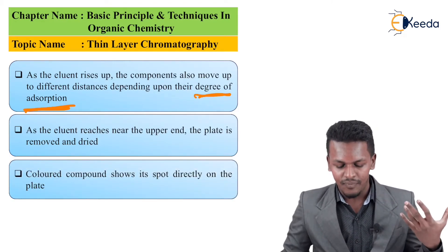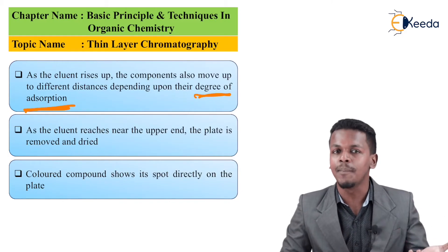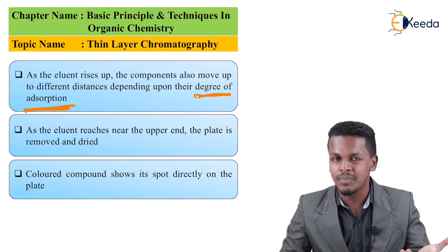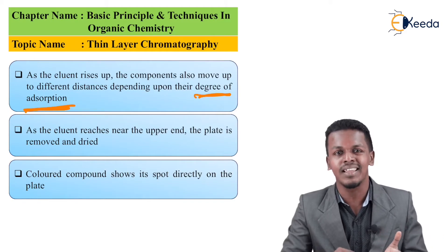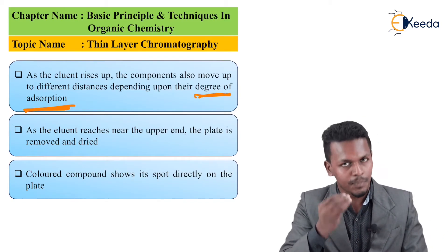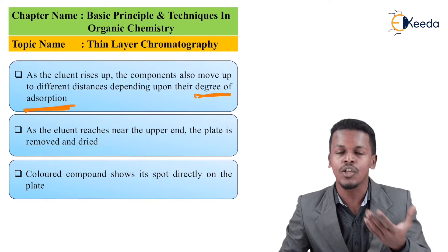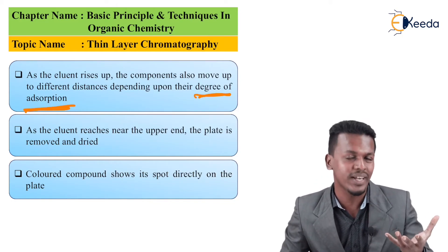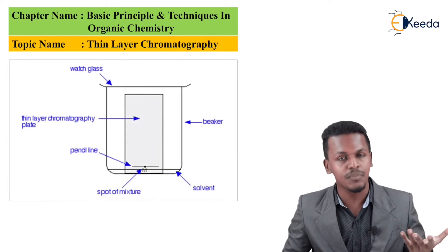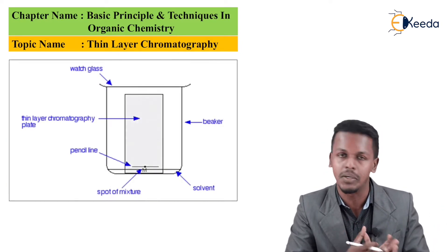If colored components are present in the mixture, they can be easily visible and we can easily determine how much a particular component has risen from the baseline — this is how we detect which compound it is. We have a particular diagram to help understand how this technique works.